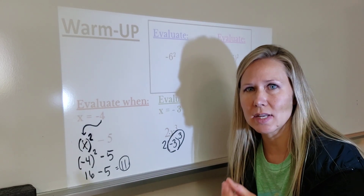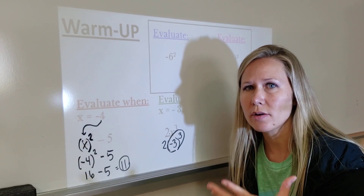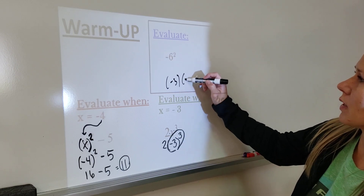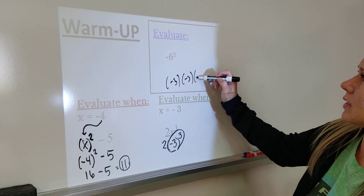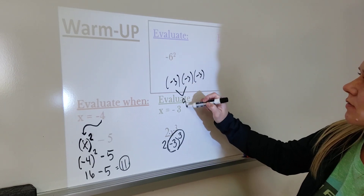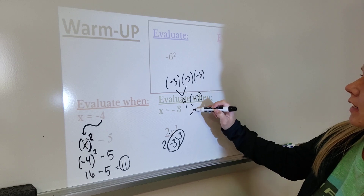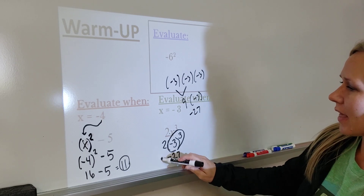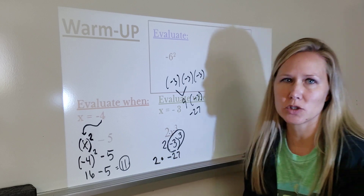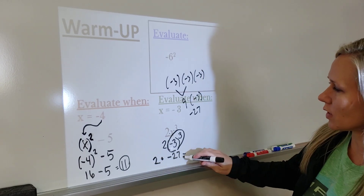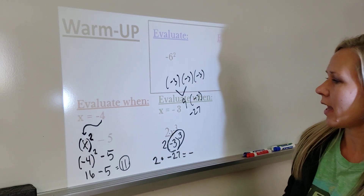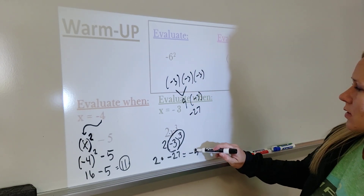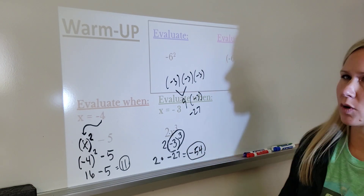Negative 3 times negative 3 times negative 3. When in doubt, write it out — literally write that out. These two make a positive 9, then you multiply it by negative 3, you get negative 27. Then you can multiply that by 2. The signs disagree, and we're really just taking 27 and doubling it, giving us 54. So, negative 54.